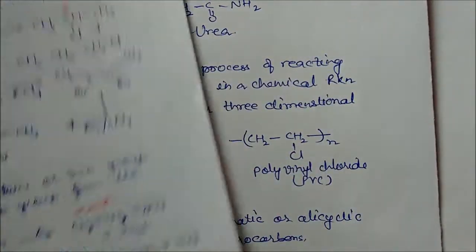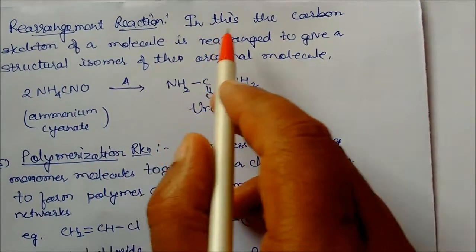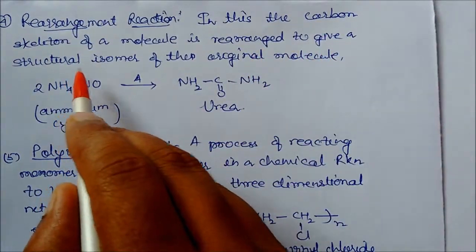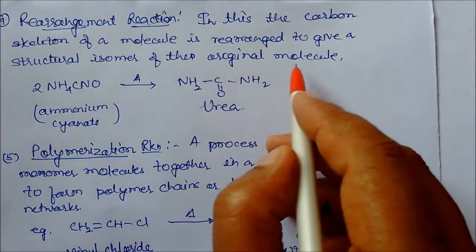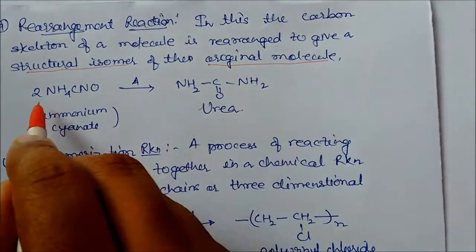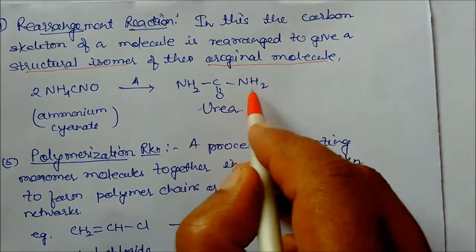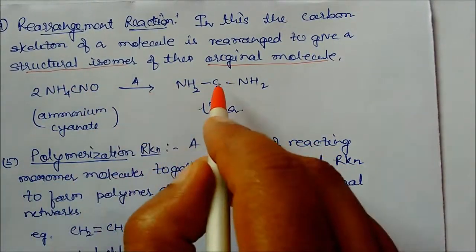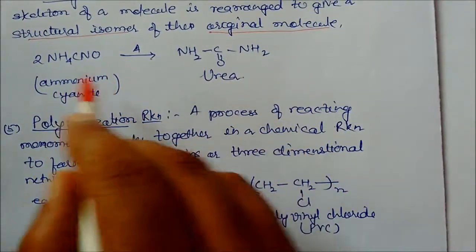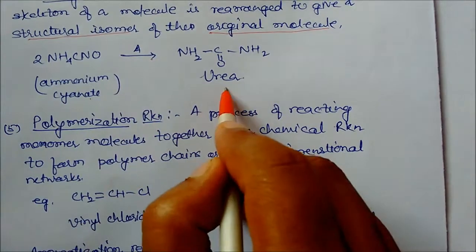The next reaction is rearrangement reaction. In this reaction, the carbon skeleton of a molecule is rearranged to give a structural isomer of the original molecule. For example, ammonium cyanate on heating gives NH2-CO-NH2 (urea). The structure is different but the molecular formula is the same — these are called isomers. Ammonium cyanate converts to urea.